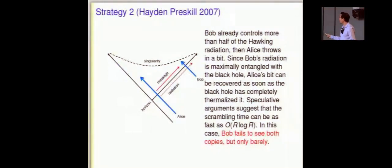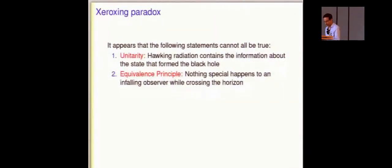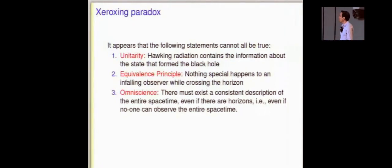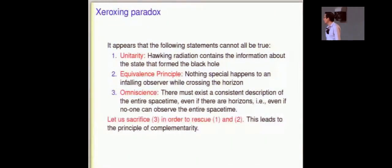And then Bob gets it back quickly, jumps in, tries to see Alice's copy of the bit, just as before. This time he misses, just barely. So at first it seems that we have to choose between these two principles, unitarity and the equivalence principle. But what these thought experiments show, when we look at it more carefully, we realize that there's another hidden assumption which we could give up instead. Omniscience. The idea that there has to be a consistent description of the entire global space-time. If we insist on that, yes, then there are two copies made from one. That's bad. But if we ask only about what any one observer can see, any one observer does not see quantum Xeroxing. And so complementarity is simply the decision to sacrifice three in order to preserve one and two.